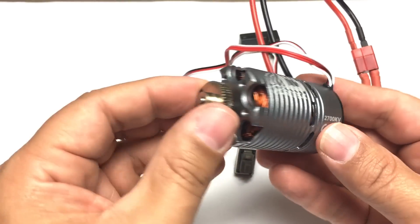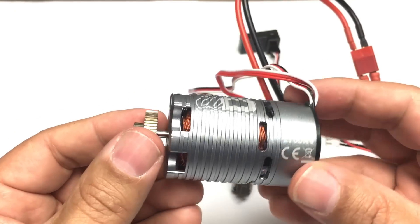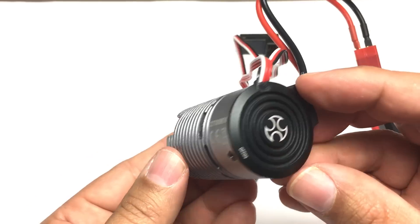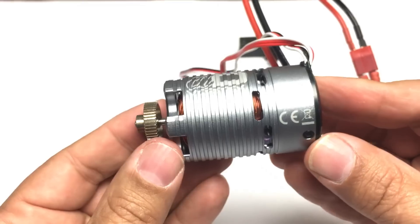So for a smaller model, definitely going to be more convenient to get that setup done. And just in any model regardless of size, without the speed control to worry about programming or getting installed in the car or routing wires, this gets you up and running a lot more quickly.